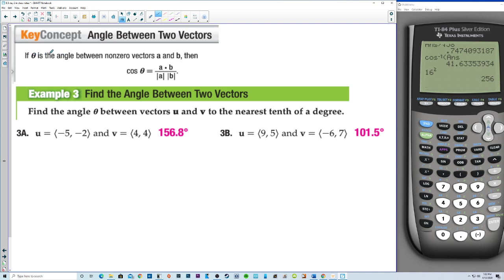Angle between two vectors. If theta is the angle between non-zero vectors a and b, then there's the formula for finding at least the cosine of the angle. And then we do inverse cosine of both sides. Find the angle theta between vectors u and v to the nearest tenth of a degree.